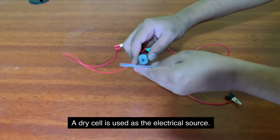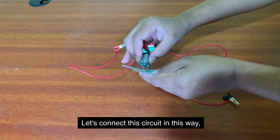A dry cell is used as the electrical source. Let's connect this circuit in this way.